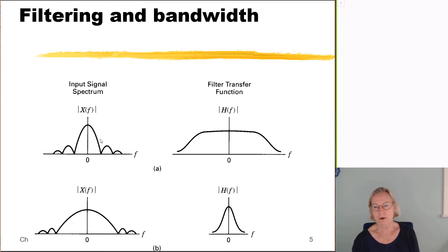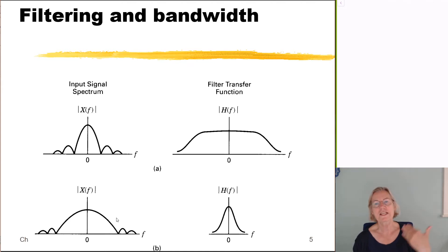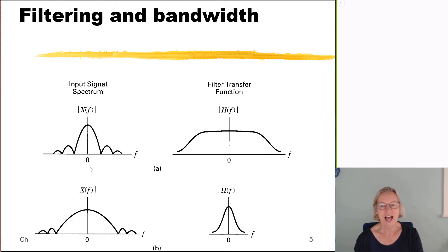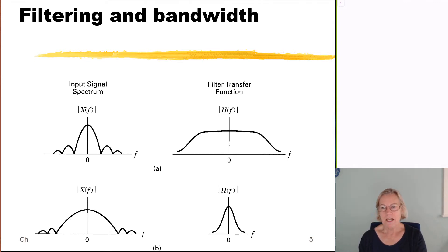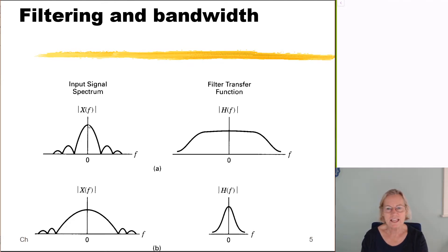On the input side, one signal is fairly narrowband and the other is much wider band. A narrowband signal corresponds to sending information at a fairly low bit rate — low frequency occupancy. As you try to send information more rapidly, the spectrum of your signal gets wider. When you have a narrowband signal going through a wideband channel, the channel is flat across the signal's energy, so the output Y looks very much like the input X.